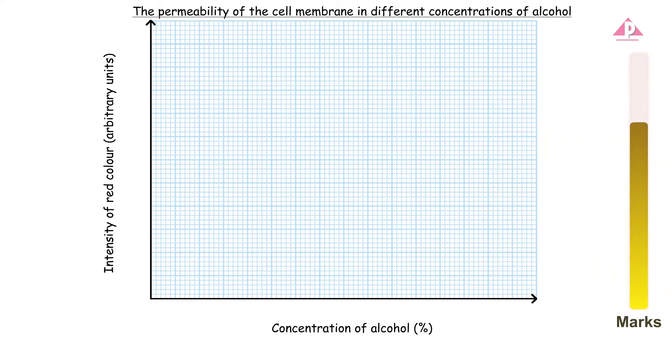Now refer to the data shown. Setting 10 minor divisions on the x-axis as 10% and 10 minor divisions on the y-axis as 5 arbitrary units allows all data points to be shown and occupies most of the space on the graph paper.